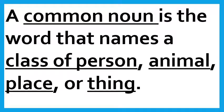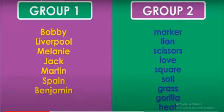A common noun is the word that names a class of person, animal, place, or thing. I have divided common and proper nouns into two groups. In group 1 there are all proper nouns and they start with a capital letter: Bobby, Liverpool, Melanie, Jack, Martin, Spain, Benjamin. In group 2 you can see common nouns written in small letters: marker, lion, scissors, love, square, soil, grass, gorilla, and heat. So these are all common nouns.